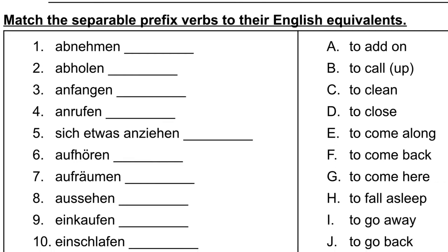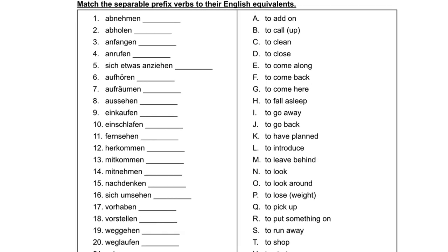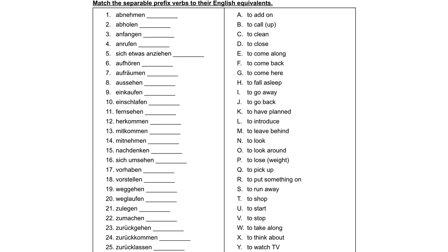Here we have a big matching section, to help people understand what these verbs mean and how the meanings change between the original form and the prefixed version. Like abnehmen — the core verb is nehmen, but when you add ab, meaning off, abnehmen means to lose weight. We say to lose weight even though it's literally to take off.